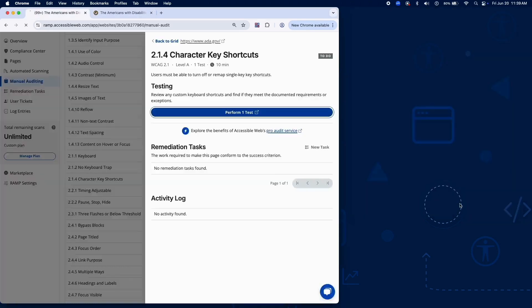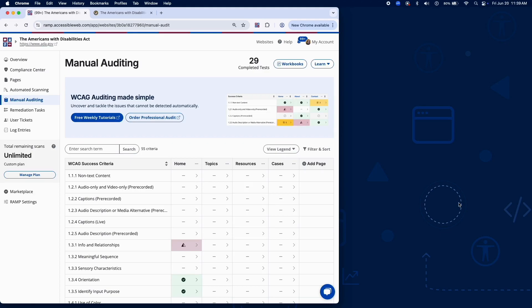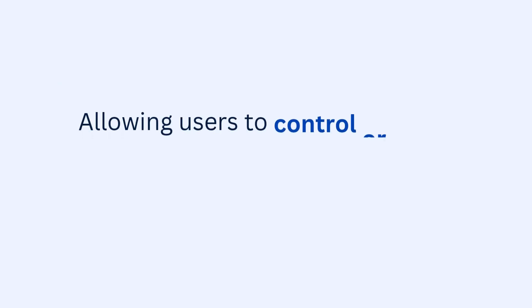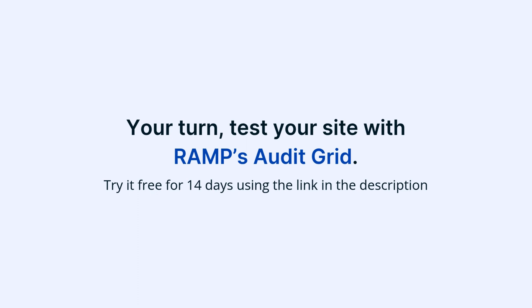That completes the audit for Success Criterion 2.1.4 using RAMPS Audit Grid and Chrome Extension. Allowing users to control or avoid accidental key presses improves accessibility and usability. Now it's your turn — test your site with RAMPS Audit Grid. Try it free for 14 days using the link in the description.